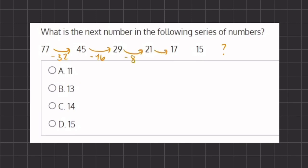Moving from 21 to 17, we are subtracting by 4. And from 17 to 15, we are subtracting by 2.